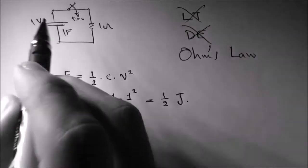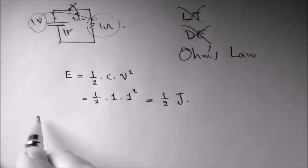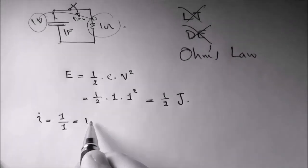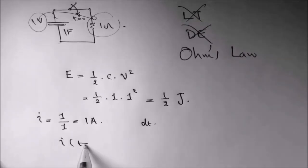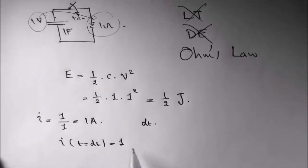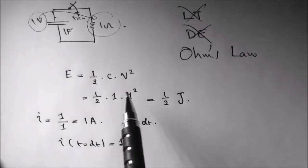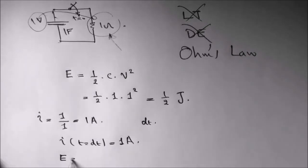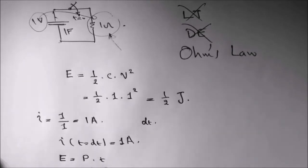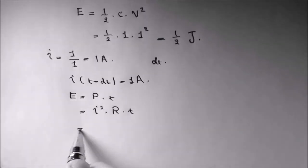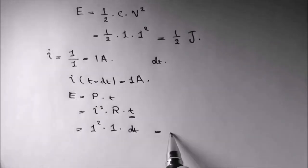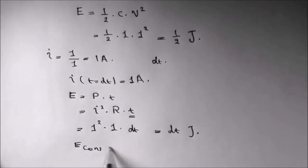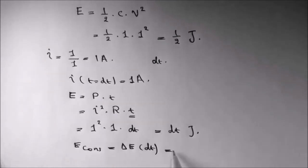Now in the first moment, we have one volt applied on a one ohm resistor. So there will be a current of one volt over one ohm, which equals one ampere. But this will last only for a very small amount of time — let's call it dt. So we can say that I when t equals dt equals one ampere. The energy consumed in this resistor is: energy equals power times time, and power is I squared times R times t. So we have 1 squared times 1 ohm times dt, which gives dt joules consumed.